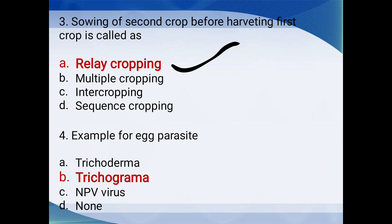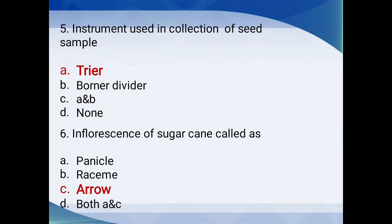Example of an egg parasite: Goondasha, Parana jivian, Trichoderma, Trichogramma, or NPV virus (Nuclear Polyhedrosis Virus)? The answer is Trichogramma — it is an egg parasite.